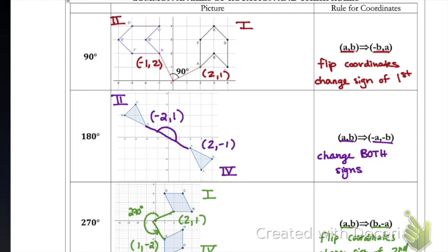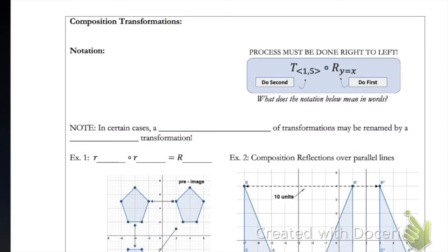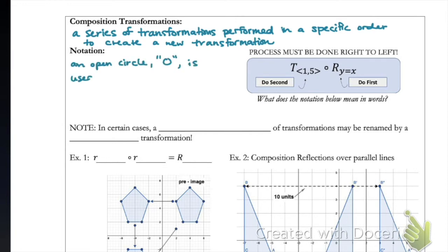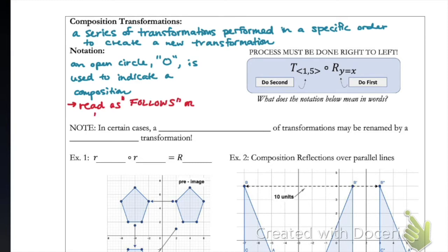Pause the video here and review these as needed. Up to this point we have been considering just single transformations: translations, reflections, and rotations. But now we can combine those single transformations to create a new transformation called a composite transformation — a series of transformations performed in a specific order. We denote this using an open circle, which indicates a composition of functions.